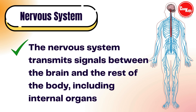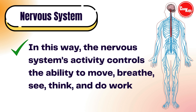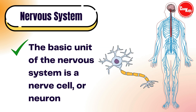The nervous system transmits signals between the brain and the rest of the body, including all internal organs. In this way, the nervous system's activity controls the ability to move, breathe, see, think, and do all kinds of work. The basic unit of the nervous system is the nerve cell, also called a neuron.